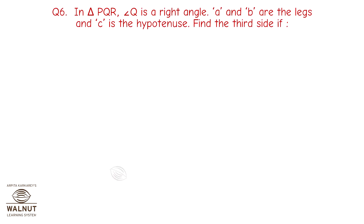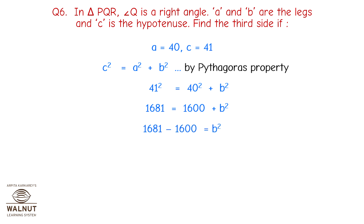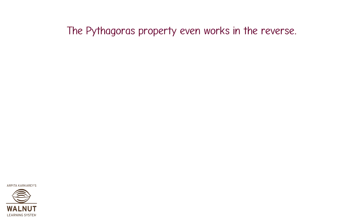Question 6: In triangle PQR, angle Q is a right angle. A and B are the legs and C is the hypotenuse. Find the third side if A equals 40 and C equals 41. By Pythagoras' property, C squared equals A squared plus B squared. Therefore, 41 squared equals 40 squared plus B squared. Therefore, 1681 equals 1600 plus B squared. Therefore, 1681 minus 1600 equals B squared. Therefore, 81 equals B squared. Therefore, the square root of 81 equals B. Therefore, B equals 9. The third side is 9 units.